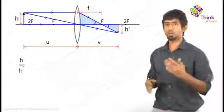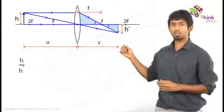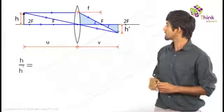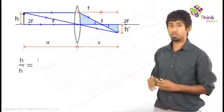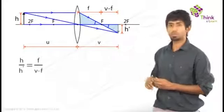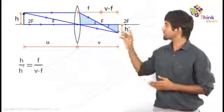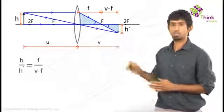If it's h by h dash, it's the object size by the image size. And you write it down there, and what do you get? That's equal to that length by this length. And what is that length? It's just F. And the other length is V minus F, because the overall length is V, and the smaller length is F. So we have one equation.